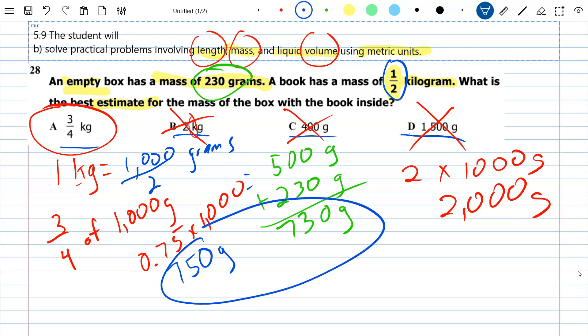And you can see they're pretty close to each other. That's why they said best estimate. So our best estimate here is three-fourths kilograms, which is 750 grams because our answer was 730 grams.